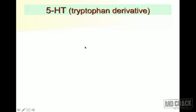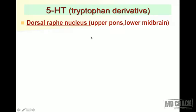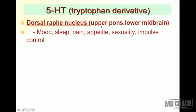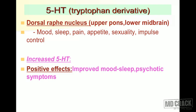The next important neurotransmitter is 5-hydroxytryptamine, a tryptophan derivative associated with the dorsal raphe nucleus in the upper pons and lower midbrain. It controls mood, sleep, pain, appetite, sexuality, and impulse control. When 5-HT is increased, there are positive effects: improved mood, high mood, better sleep, and psychotic symptoms.